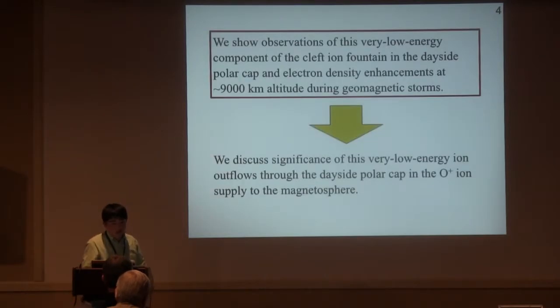We show observations of this very low-energy component of the cleft ion fountain in the dayside polar cap and electron density enhancement at about 9,000 km altitude during geomagnetic storms. We discuss the significance of this very low-energy ion outflow through the dayside polar cap in the O+ ion supply to the magnetosphere.